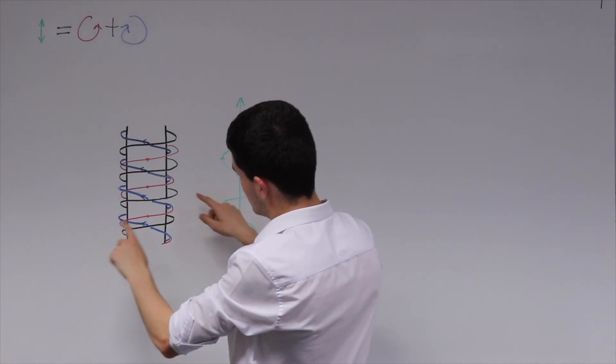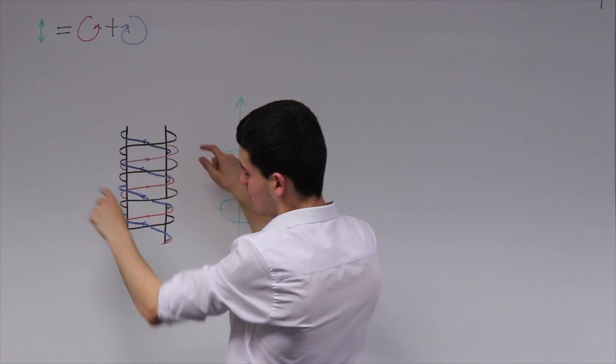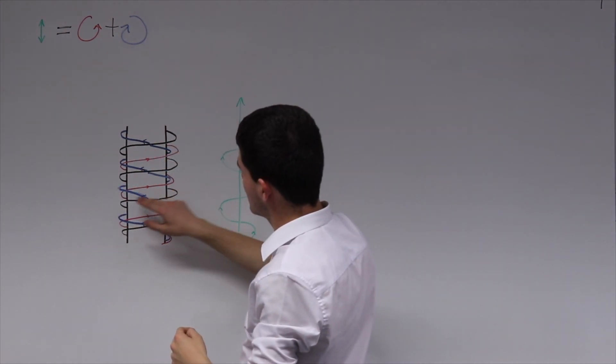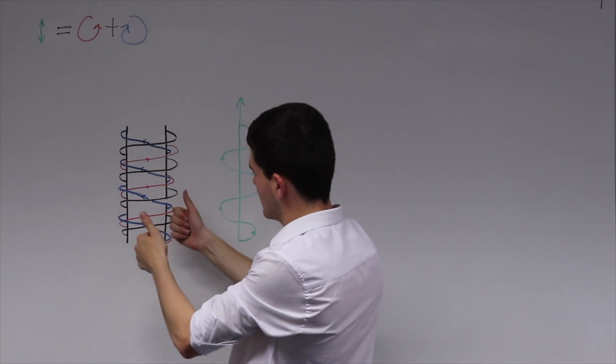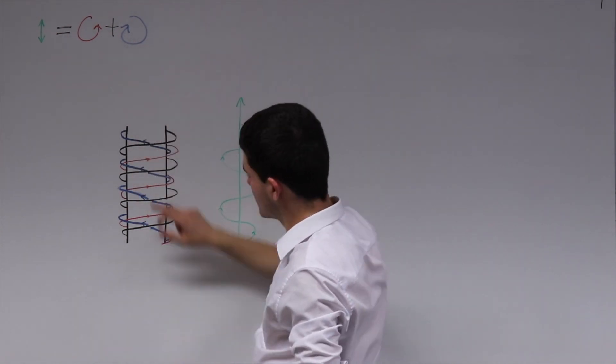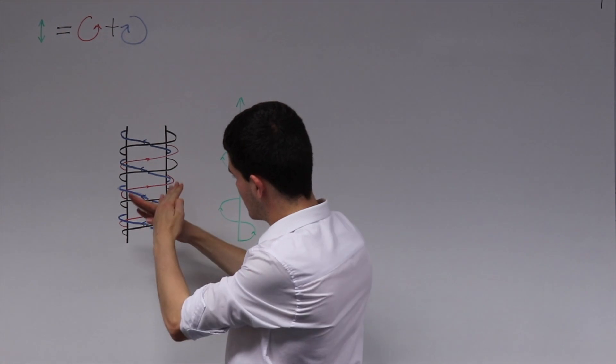The two circular components of the green linear light have different experiences through the spirals of the screw. The red circular light is unobstructed and passes through without problem, while the blue circular light is obstructed and has a harder time passing through, slowing it down.